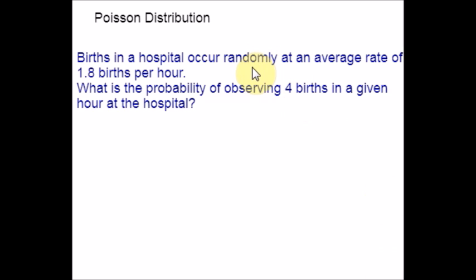Let us see an example and check how this formula is applicable in a real life example. Births in a hospital occur randomly at an average rate of 1.8 births per hour. What is the probability of observing 4 births in a given hour at the hospital? Let x be the number of births given in an hour. Mean rate is 1.8 and x is 4 births.